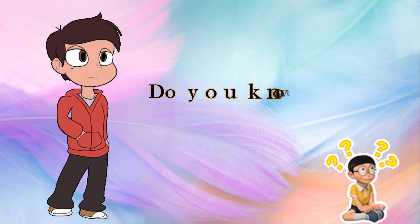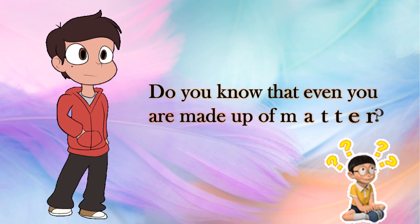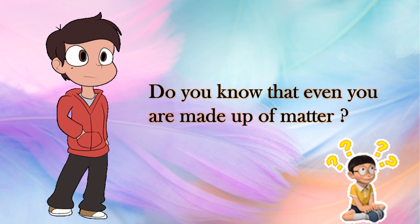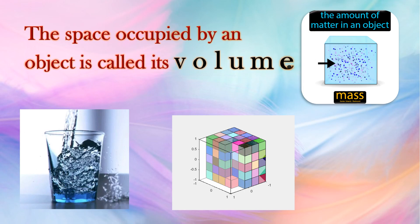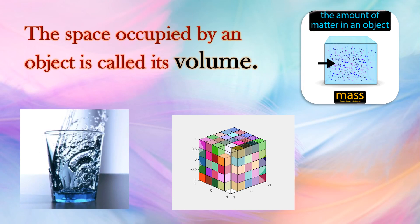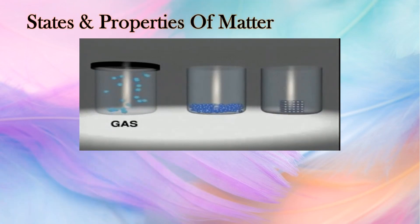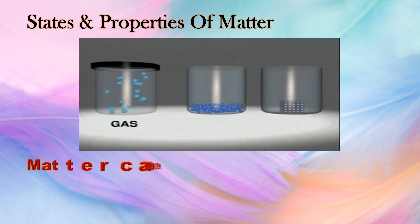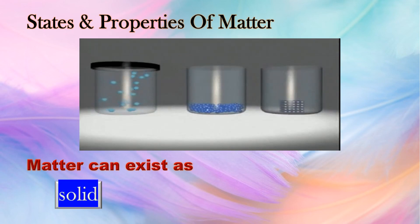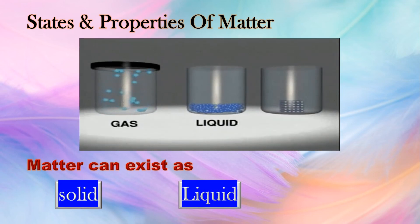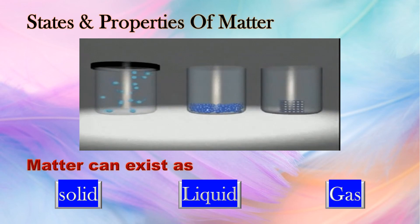Do you know that even you are made up of matter? The space occupied by an object is called its volume. States and properties of matter: matter can exist as solid, liquid, or gas.